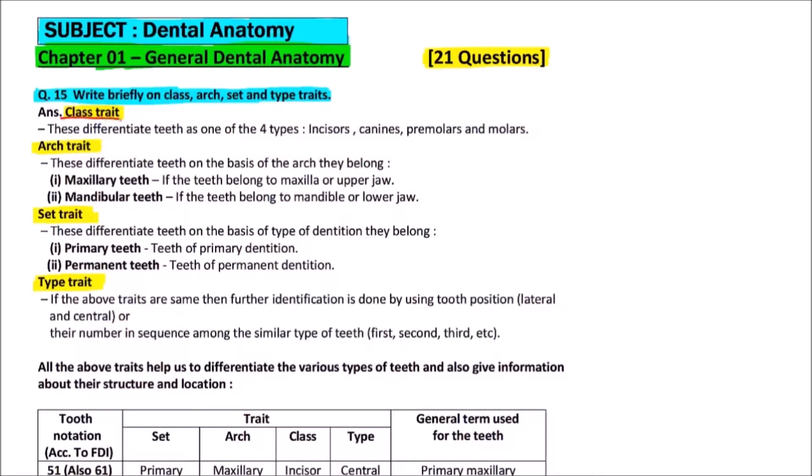First of all, class trait. These differentiate teeth as one of four types: incisors, canines, premolars, and molars.